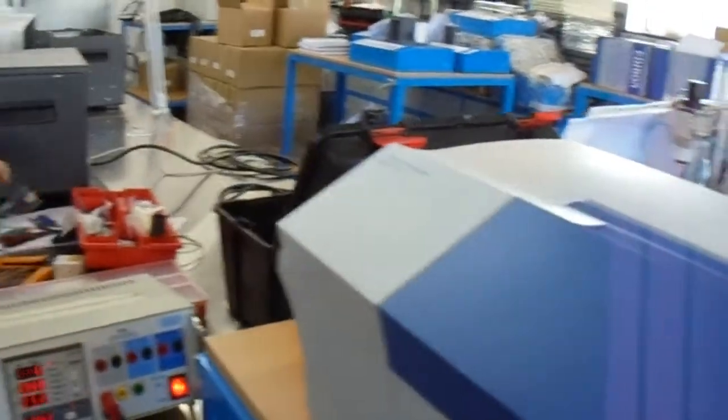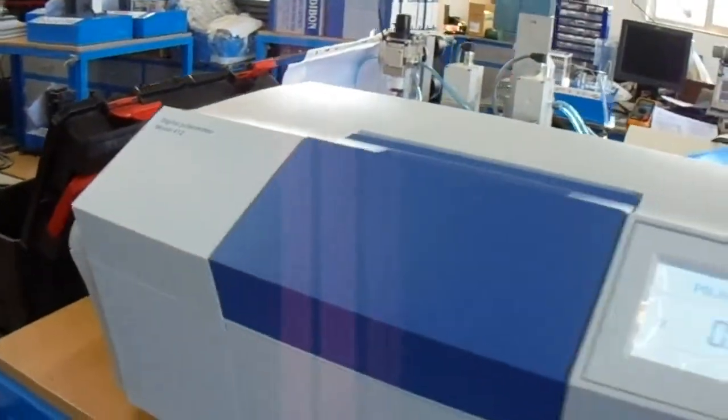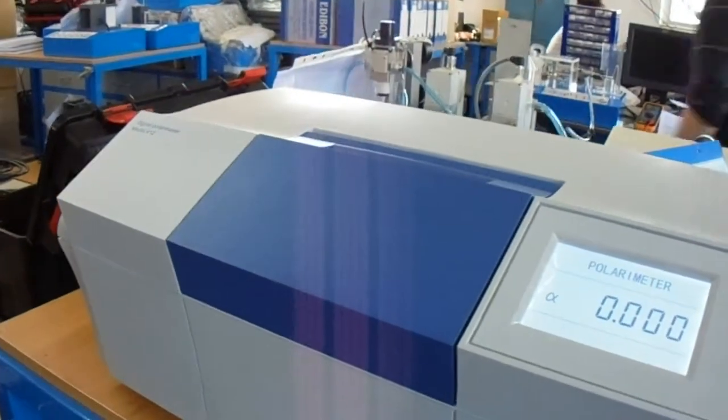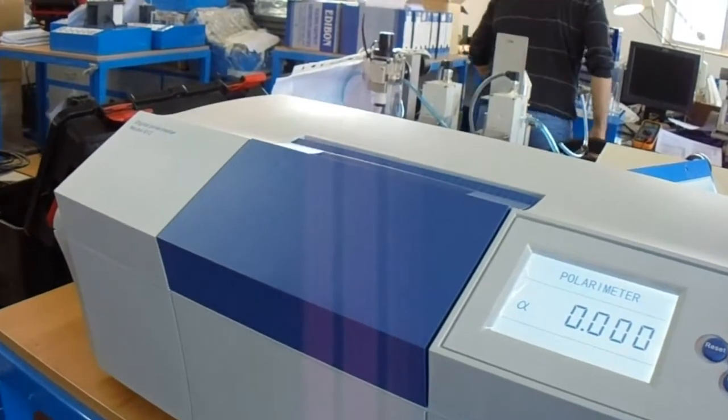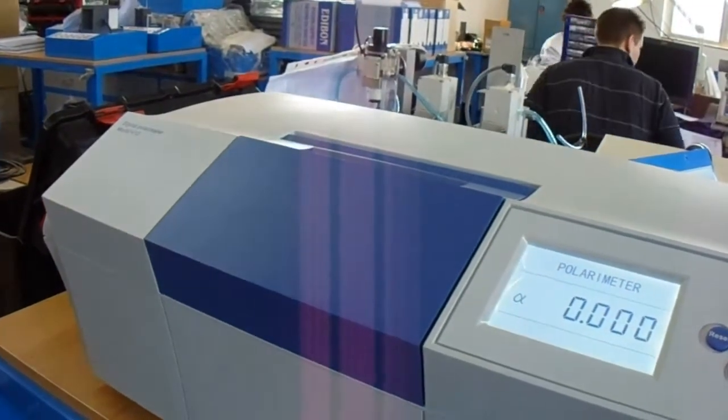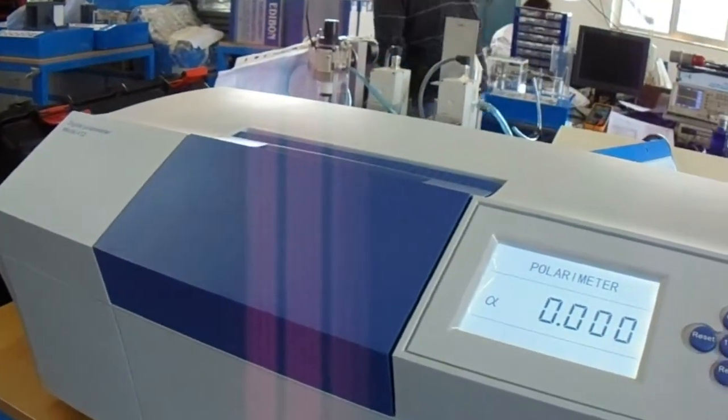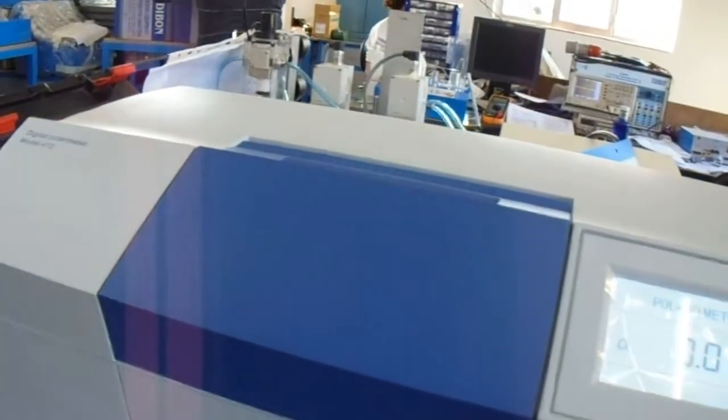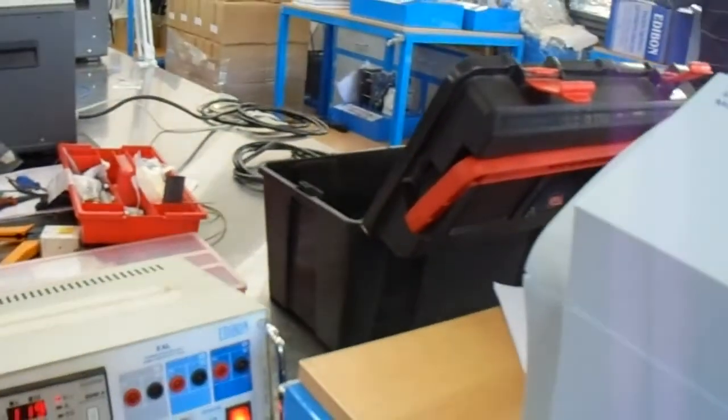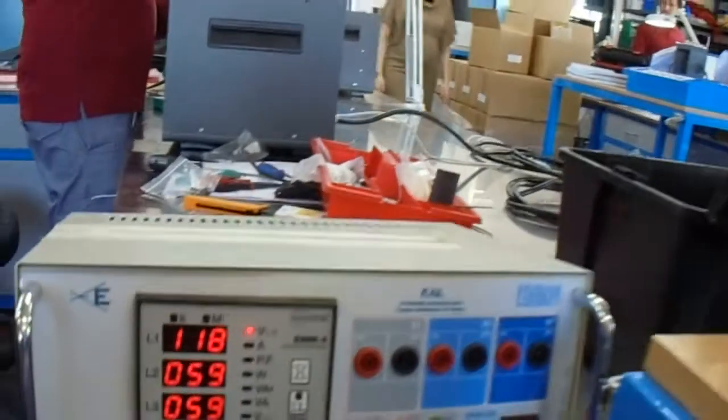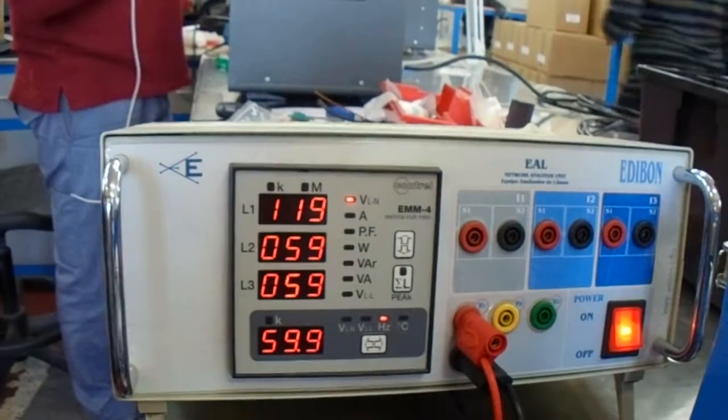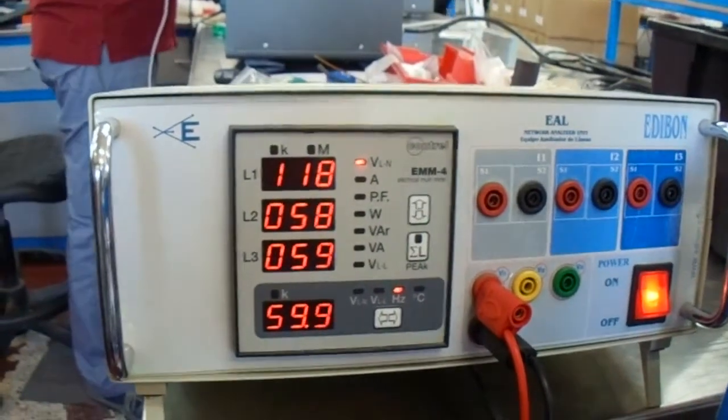Hi again, we will show you in the following video how to test the sample that we have prepared before. First of all, to test our polarimeter, we need to simulate the same electrical conditions that you have, having power of 110 volts and the same frequency that you have in your laboratory.